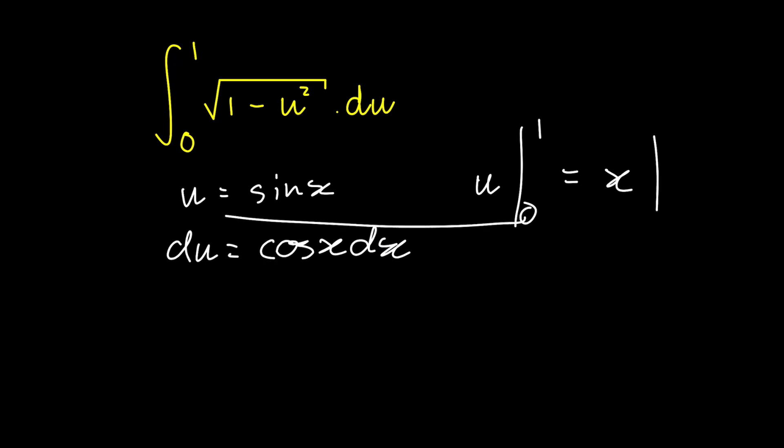Sine of 0 gives us 0. So we can integrate x from 0 to... And now sine of what gives us 1? Sine of pi by 2, which is the radian measure for 90 degrees. So we have pi by 2 gives us 1.